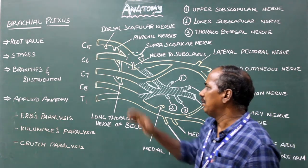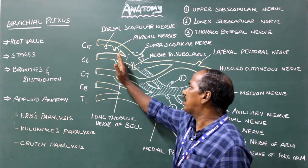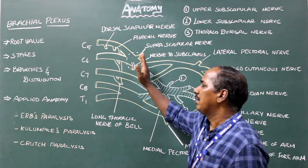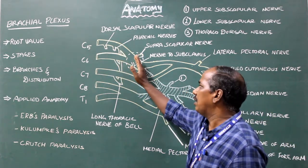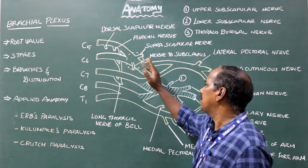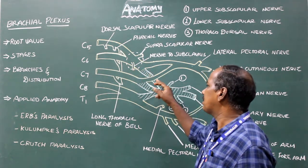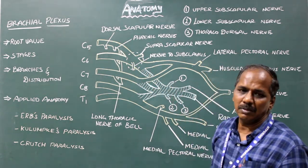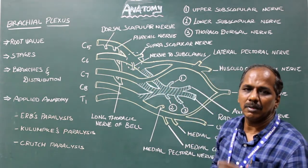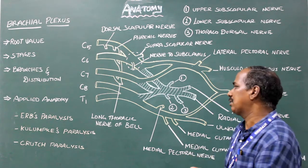So to summarize: root stage, trunk stage, division stage, cord stage — and now the branches.